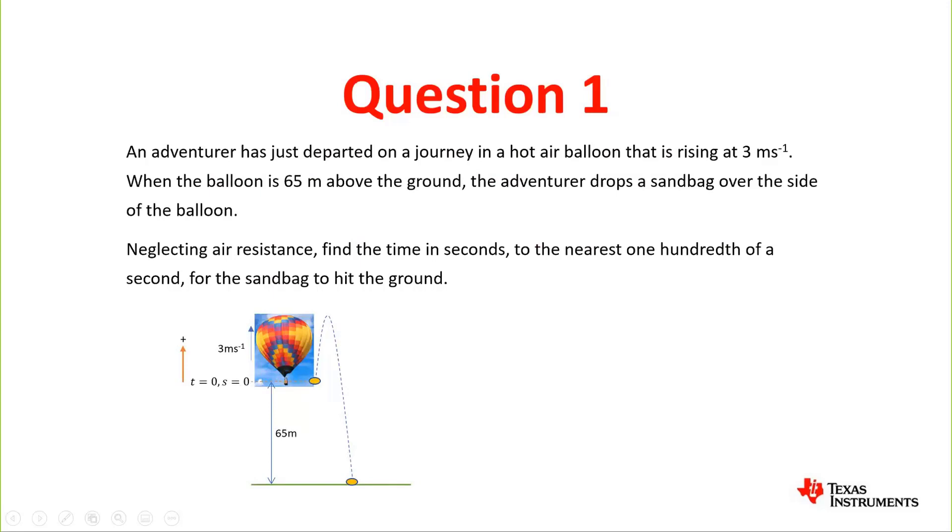We see in the question that u was 3 meters per second. The time is what we've got to find out. The acceleration is -9.8 because we said positive was upwards, and the displacement is -65 because we set s = 0 here and when it hits the ground will be at -65. So once we have all this information we will use the equation s = ut + ½at².